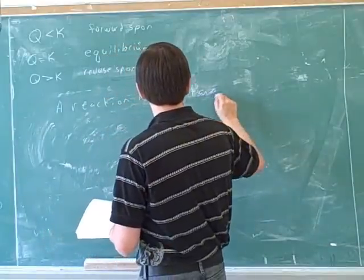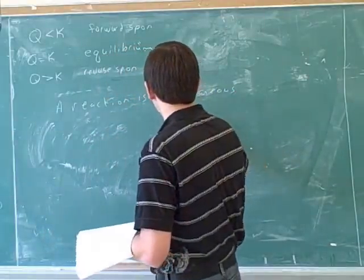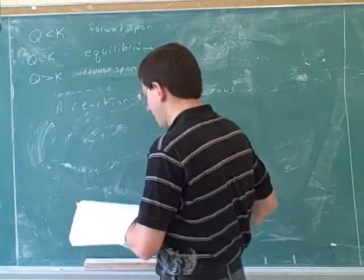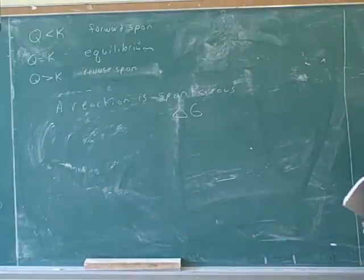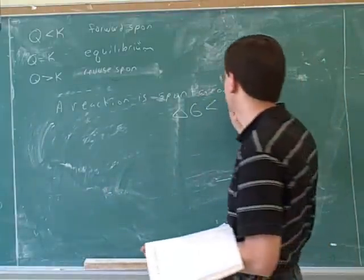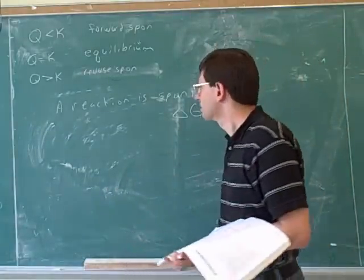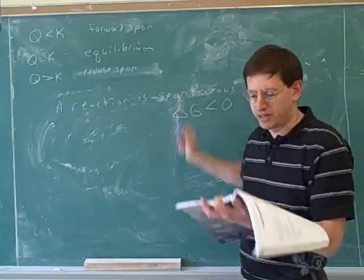If the reaction is spontaneous, what does that tell us about its delta G? It's negative. Good — because this means the forward reaction is spontaneous.